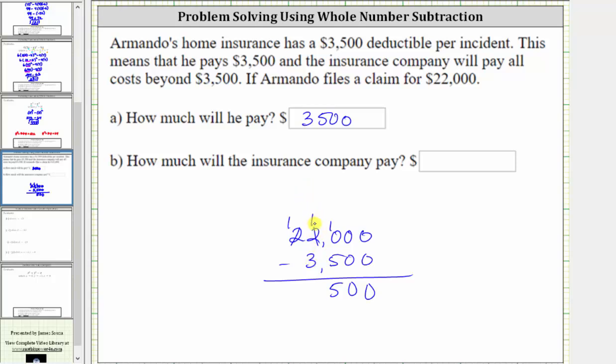10 plus the one already in the thousands place value gives us 11 in the thousands place value. 11 minus three is eight, and we still have a one in the ten thousands place value.